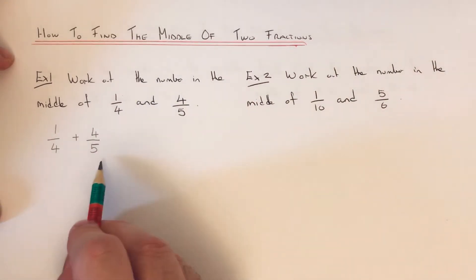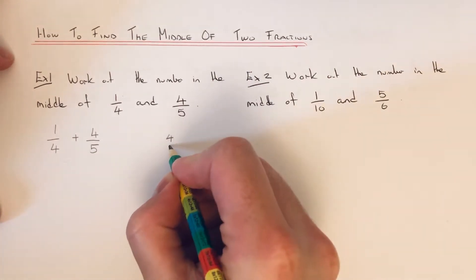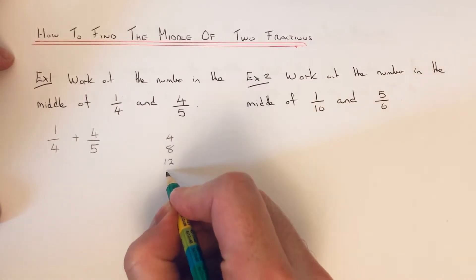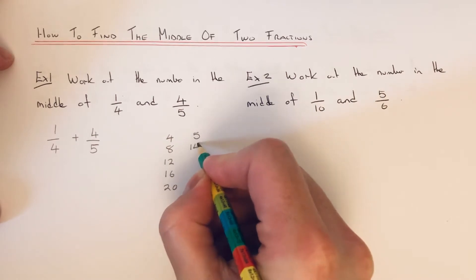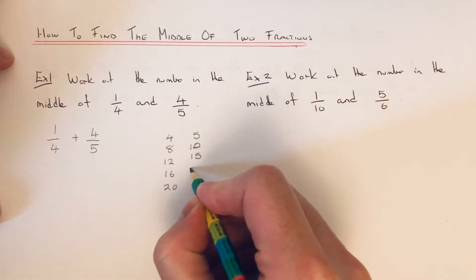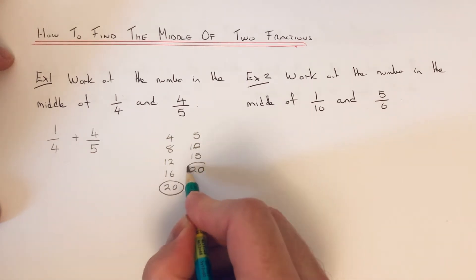Okay, so we'll need to make a common denominator. Our denominators are four and five, so let's write down our multiples of four and write down our multiples of five. So you can see our lowest common multiple of four and five is twenty.